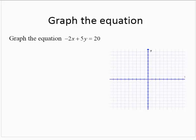Graph the equation negative 2x plus 5y equals 20. Again, I'm going to use a table of values to graph this equation.